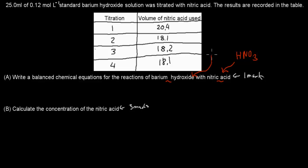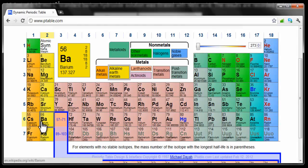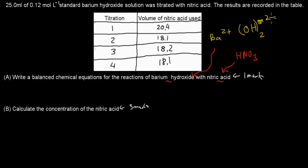For barium hydroxide, you wouldn't have to memorize it because you can check barium on the periodic table, which should be given in the exam. Barium is a group 2 metal, which means it donates 2 electrons — it's barium 2+. Hydroxide ions each accept one electron, so we need 2 hydroxide ions to balance barium's 2+ charge. So barium hydroxide is Ba(OH)₂, and nitric acid is HNO₃.